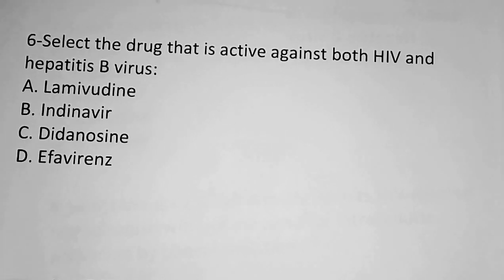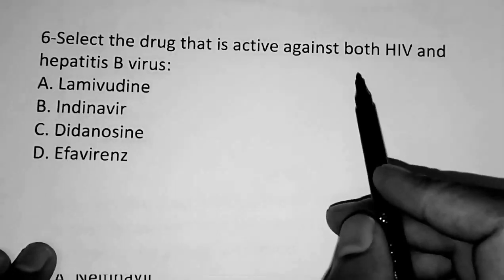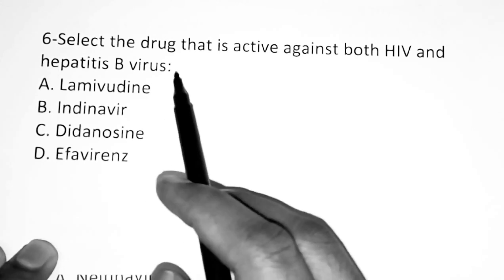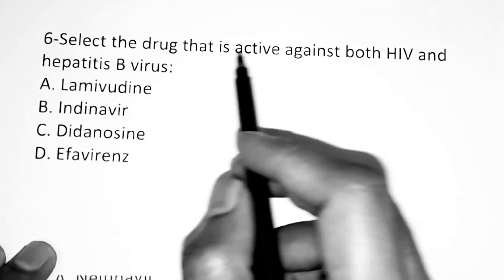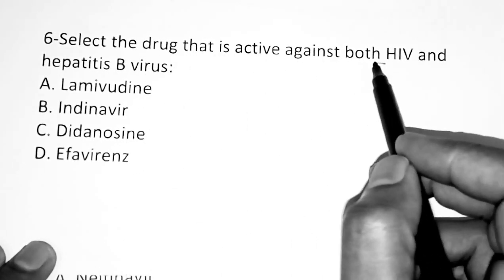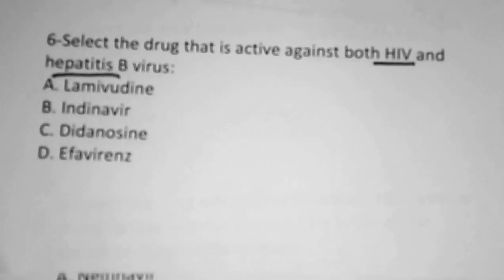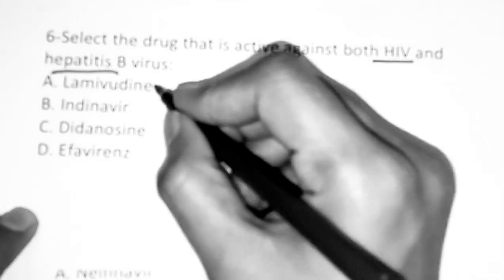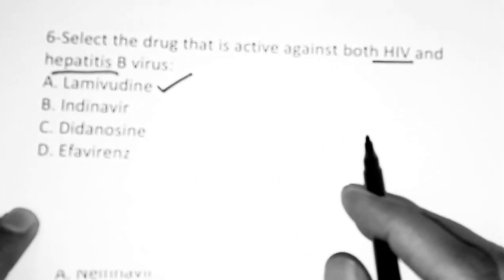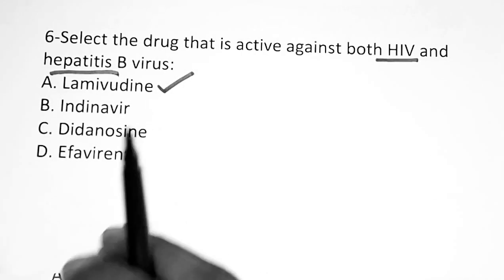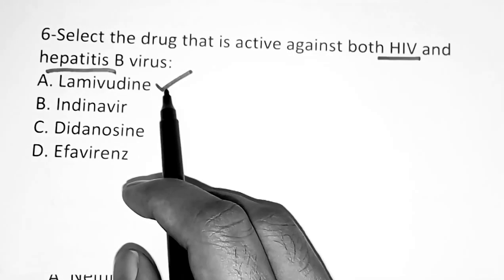Question 6: Select the drug that is active against both HIV and hepatitis B virus. Options are: lamivudine, indinavir, didanosine, efavirenz. The correct answer is lamivudine — lamivudine is an anti-HIV drug that also acts against hepatitis B virus.